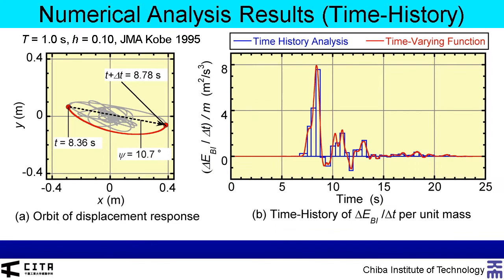I would like to show a numerical example. The natural period T and viscous damping ratio h are set to 1.0 seconds and 0.10, respectively. The input ground motion record is JMA-Kobe 1995 from the Hyogoken-Nanbu earthquake.